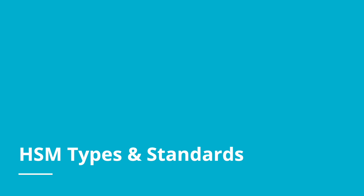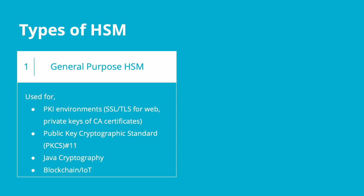What are the different types of HSMs and the standards involved in them? The first type is a general purpose HSM, typically used in PKI environments for generating SSL/TLS certificates or private and public key pairs. General purpose HSMs are also used for PKCS 11 encryption, typically in applications. They are also used in blockchains or standard Java cryptography implementations.